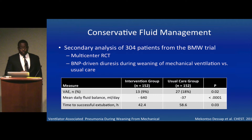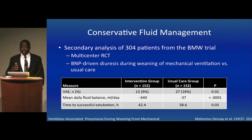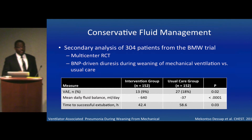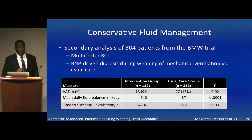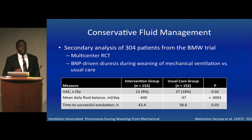The third study was a secondary analysis of 304 patients from the BMW trial — a multicenter randomized controlled trial examining BNP-driven diuresis versus usual care during weaning from mechanical ventilation. In the intervention group, daily BNPs were drawn, and if the BNP was greater than 200, patients were placed on fluid restriction and given a diuretic. Reanalysis applying VAE definitions as an outcome found that patients in the intervention group had half the number of VAEs compared to usual care — a statistically significant difference — along with significantly lower mean daily fluid balances and shorter time to successful extubation.